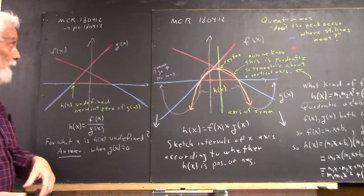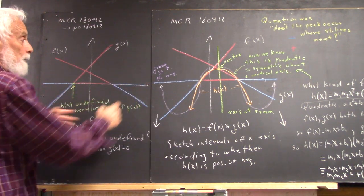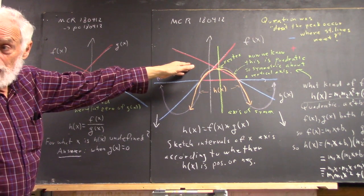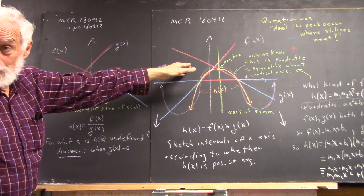One's positive, one's negative, so it'll be negative, positive, negative, just the same as this one. But that's where the comparison ends, the graph isn't going to look anything like this.